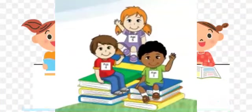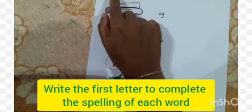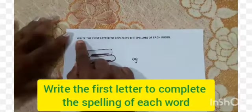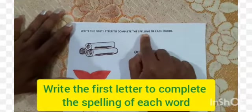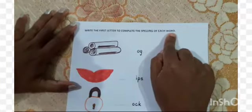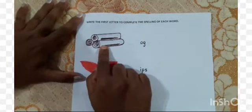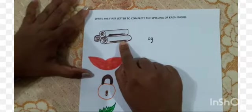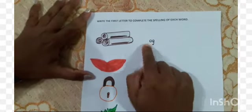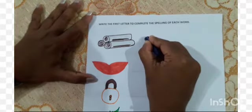Good morning children, today we are going to solve another worksheet. Write the first letter to complete the spelling of each word. As you see, it is a picture of a log. L-log, so you need to write the small letter L.